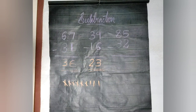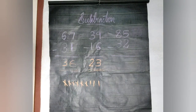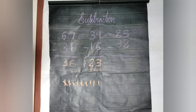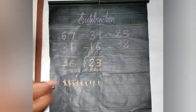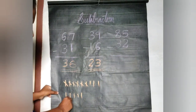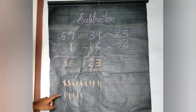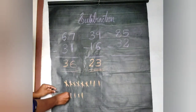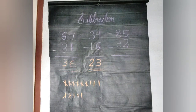Moving to the next question: 85 minus 32. Look at the position of ones. We have 5 and 2. So we have to do 5 minus 2. Count: 1, 2, 3, 4, 5 — and minus 2, so 1 and 2. So we get 3. 5 minus 2 is equal to 3.